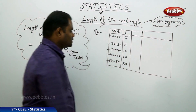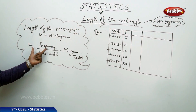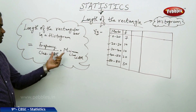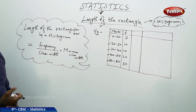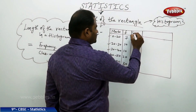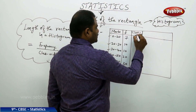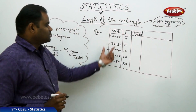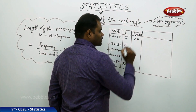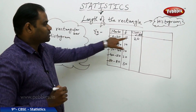For finding the length of the rectangular bar in the histogram, I need the frequency which is already given. But I also need the class width and the minimum class width. The class width for the first interval 0 to 20 is upper limit minus lower limit, which is 20 minus 0 equals 20.